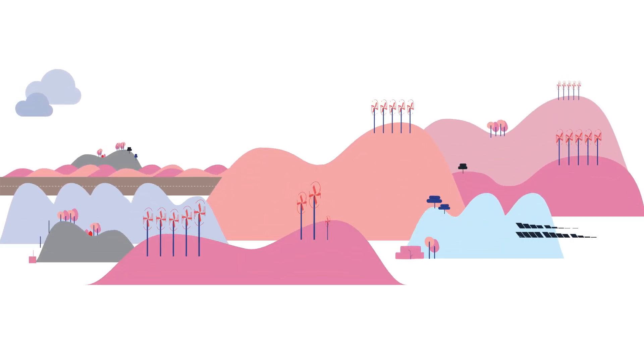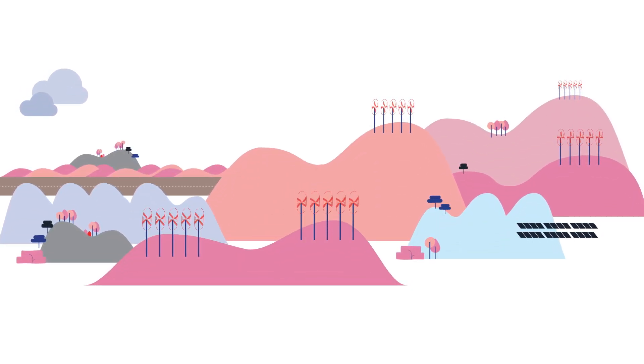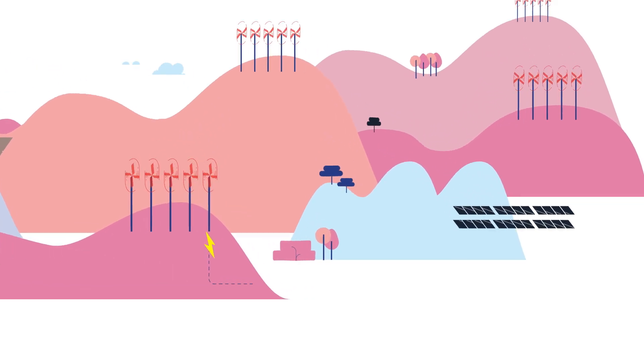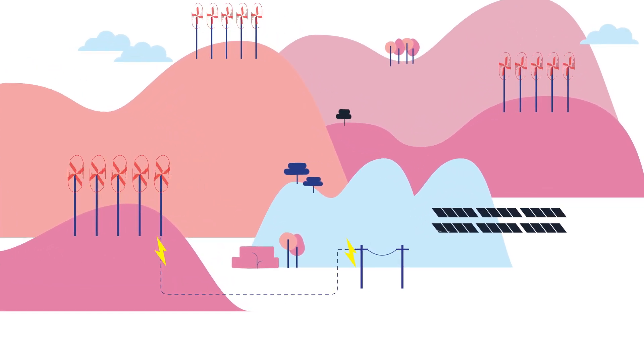Thirty-six wind and solar farms are connected to PowerCore's distribution network, all generating clean energy for homes and businesses.